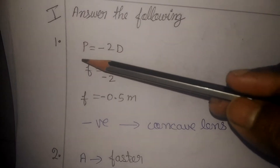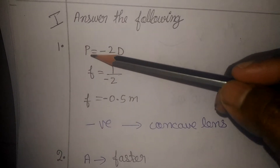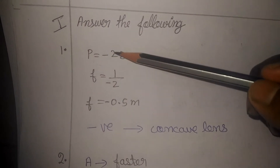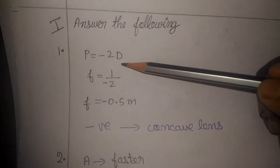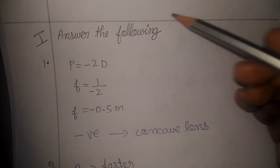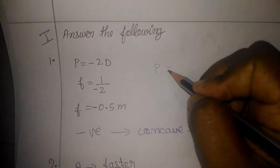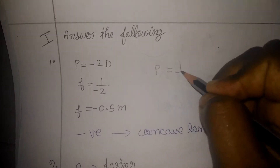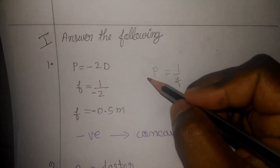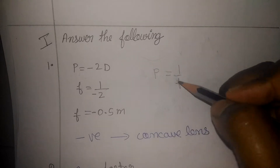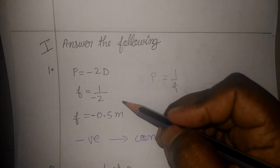Hello students. This problem: power is minus 2 diopters — what is the focal length? We know power is equal to 1 divided by focal length, so focal length is equal to 1 divided by power.